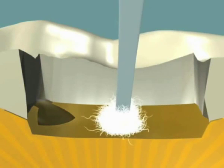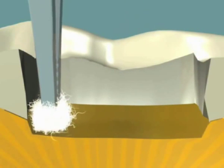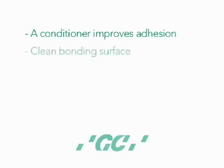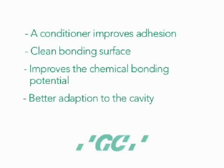Using a conditioner improves adhesion in three ways. It creates a clean bonding surface. It improves the chemical bonding potential of the glass ionomer cement, and it alters the surface energy of the tooth so that the cement can wet and adapt the cavity more effectively.